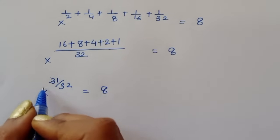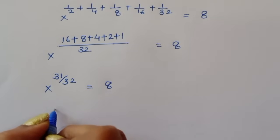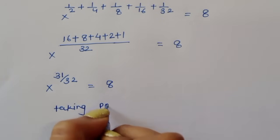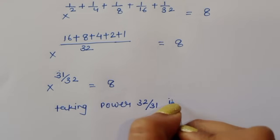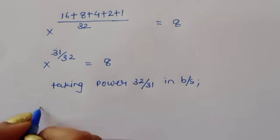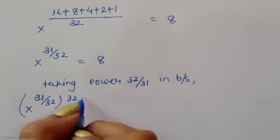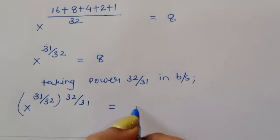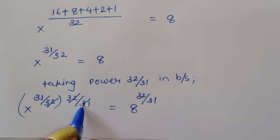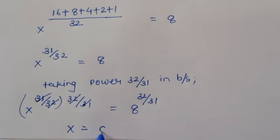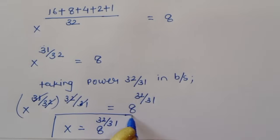To find x, we need to cancel this power. Taking power 32 divided by 31 on both sides, we get x power (31/32 times 32/31) equal to 8 power 32 divided by 31. The 32 cancels with 32 and 31 cancels with 31, so the value of x is equal to 8 power 32 divided by 31. This is the correct solution — this is the first method.